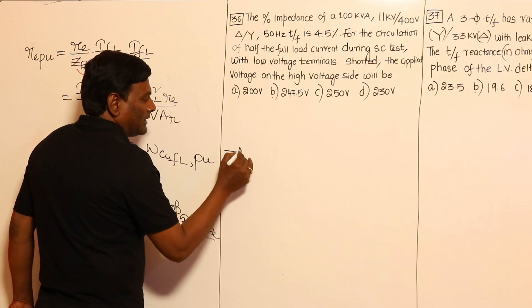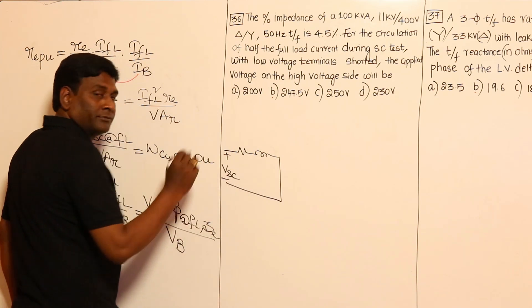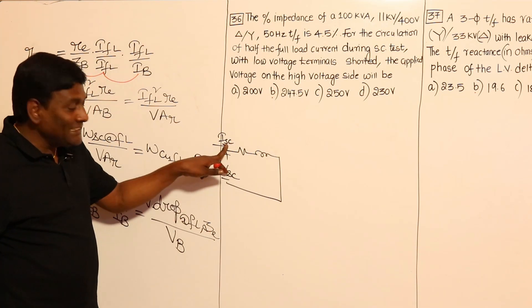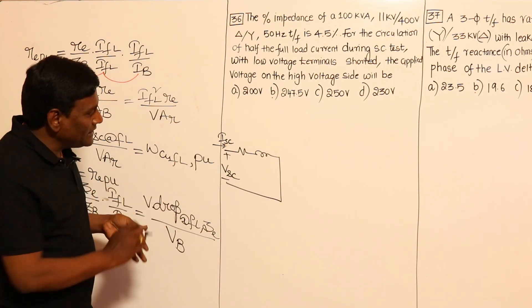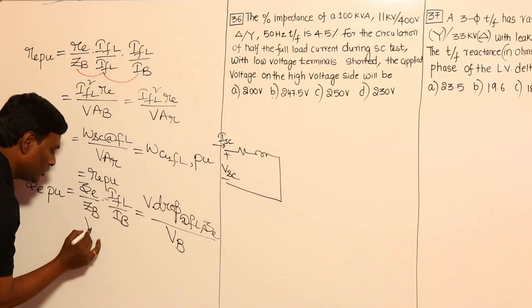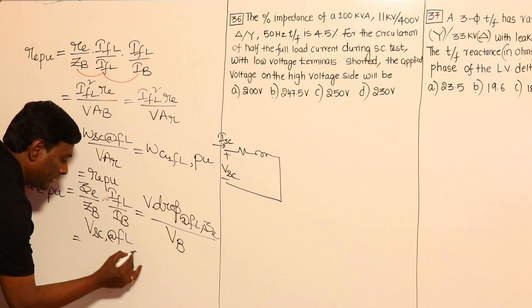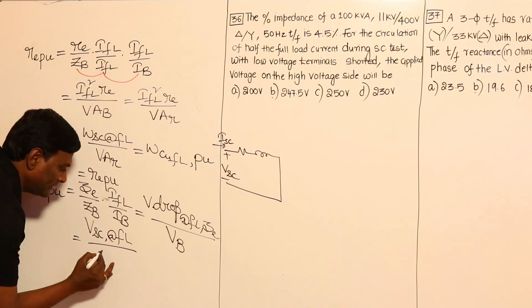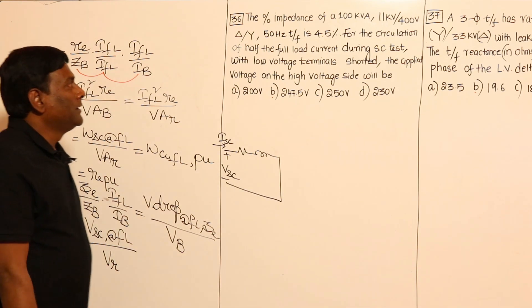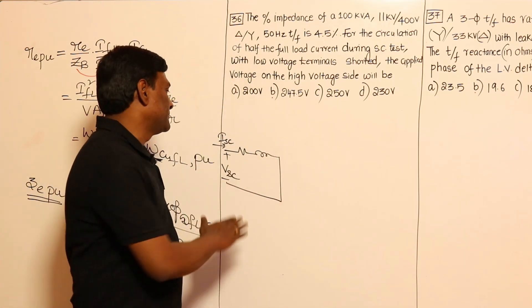For example, with RE, XE, and ISC: if ISC equals IFL, then IFL × ZE equals VSC. So this is the short circuit voltmeter reading when the test is conducted at full load, divided by V_rated. Therefore ZE per unit equals VSC (at full load) divided by V_rated. Now let us apply this ZE per unit formula in the following problem.